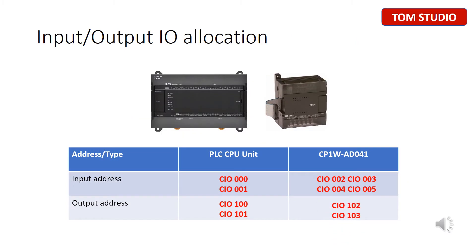In this slide, we quickly take a look at what word will be assigned to the expansion unit — what is M, what is N. M is for input: the main PLC input takes CIO words 0 and 1, so M will be 1. By the same principle, N is for output: the main PLC output starts from 100 and ends at 101, so N will be 101.